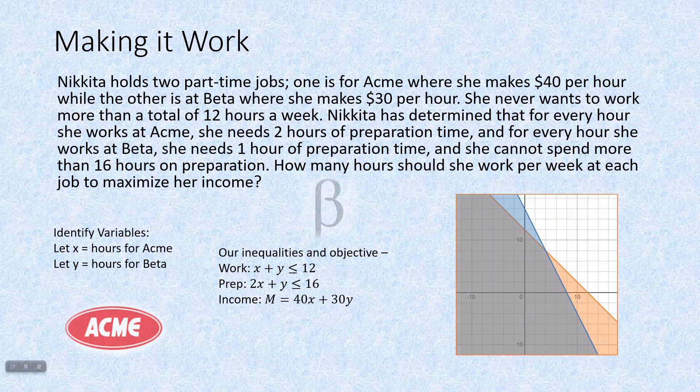When we graph this, we only have two constraint equations, not too bad. They're both less than or equal to so they both shade towards the origin. As long as your constant is positive, and you have a less than or equal to, you'll end up shading towards the origin.